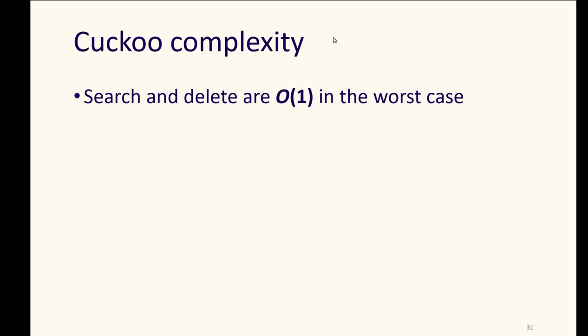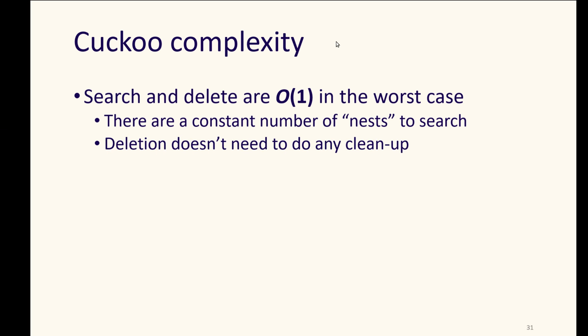The complexity is O of 1 for searching and deleting because it's some constant number of hash tables and at most we'll have to check all of those hash tables. If we have 2 or 4 or whatever, that's still O of 1. It's a constant fixed number of hash tables. And deletion doesn't need to do any real cleanup in them because we just delete from wherever the location was that we found that key. It doesn't have the cleanup issues of probing, for example, where we would risk not finding later data.